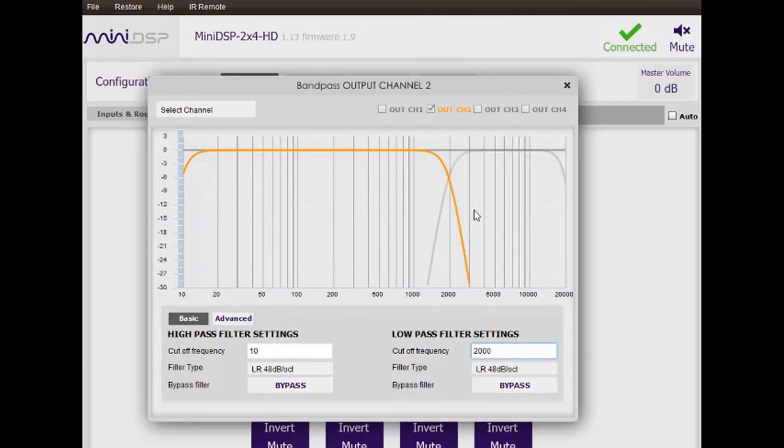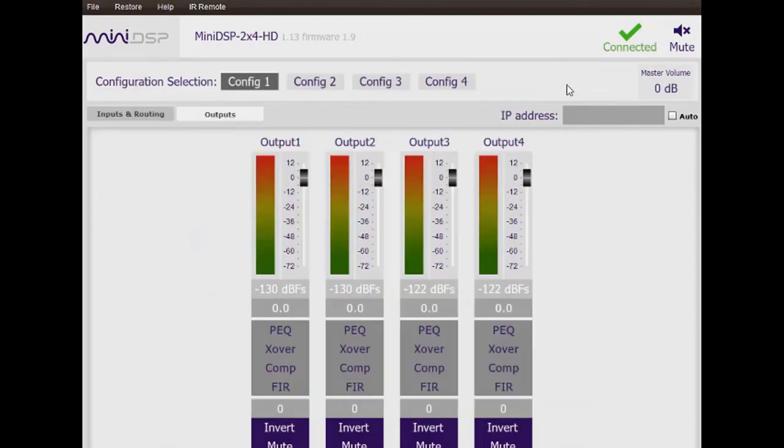We now have flexibility over varying the shapes of the filter. The Linkwitz-Riley 48 dB per octave is a very steep filter, and for example, we could choose a Butterworth 6 dB per octave filter, which is a very soft, shallow slope filter.